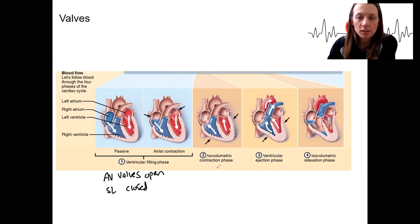During isovolumetric contraction, we are going to have the closing of AV valves. So this is going to correspond to a noise we can hear. The blood is going to push back on those valves and that turbulence causes a sound you can hear with a stethoscope called a lub.